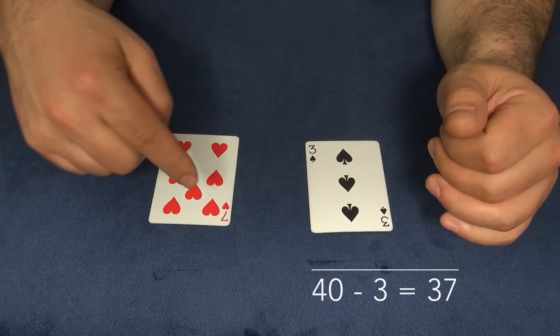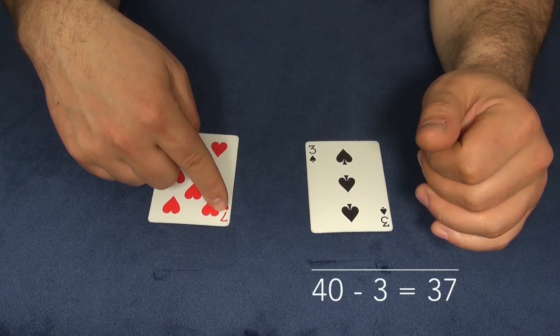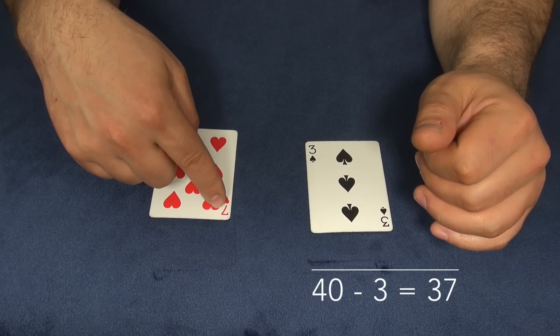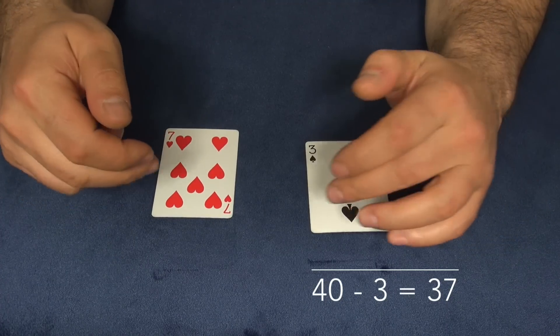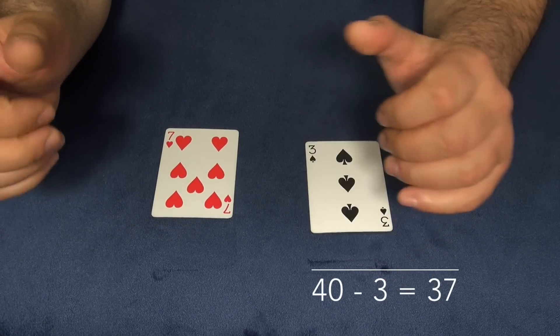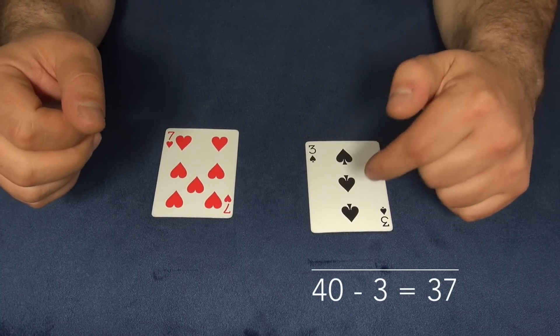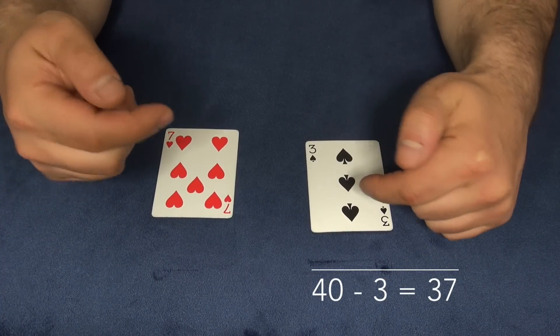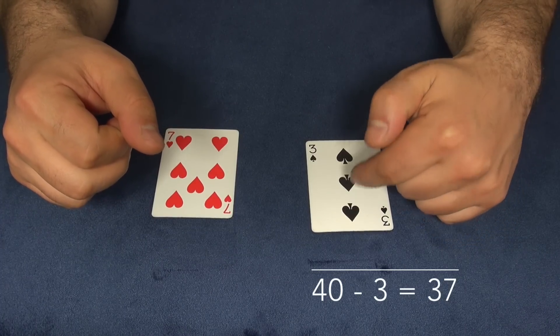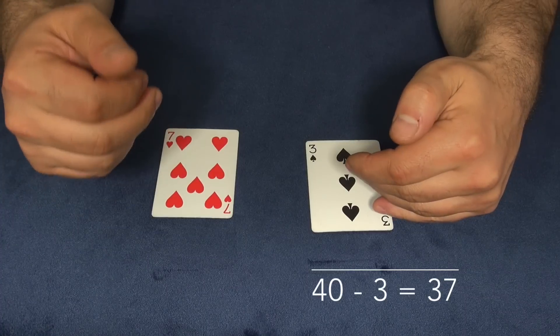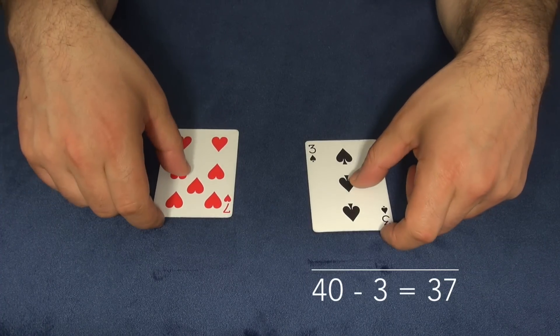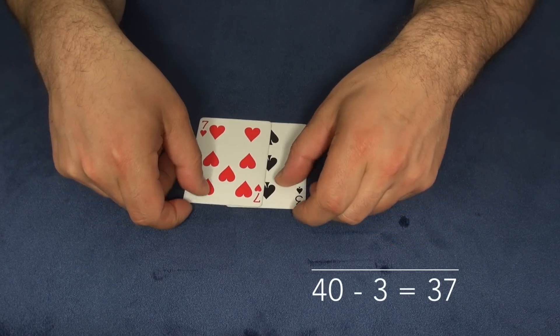Because that number depends on the value of my card, which is seven. So what I do is I subtract seven from ten, and whatever number I get, that's the number I ask the spectator to subtract from the total number. The total number was 40, 40 minus three is 37.